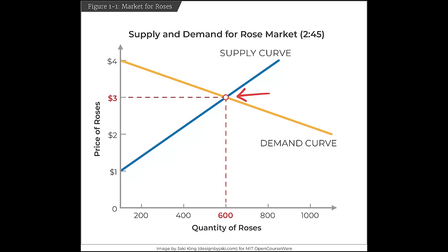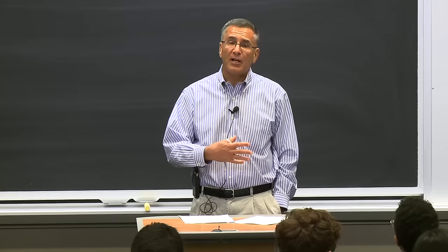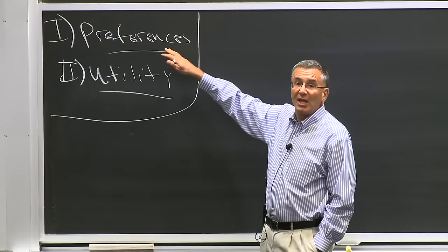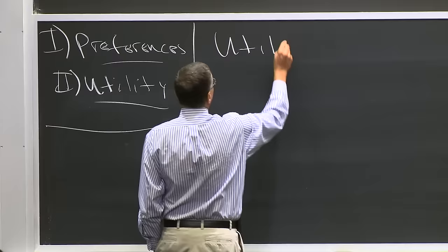How do we think about them? Where do they come from? That's what we'll spend the first half of the course going through. We're going to start today with the demand curve. The demand curve is going to come from how consumers make choices, and that will help us derive the demand curve. Then we'll turn to the supply curve, which will come from how firms make production decisions. But let's start with the demand curve, talking about people's preferences and utility functions.